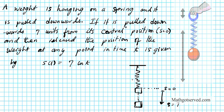So it starts to oscillate up and down, and this function right here, s of t equals seven cosine t, models the movement of this weight.